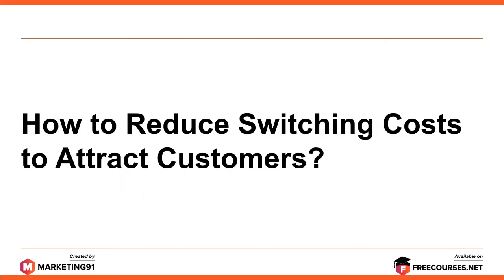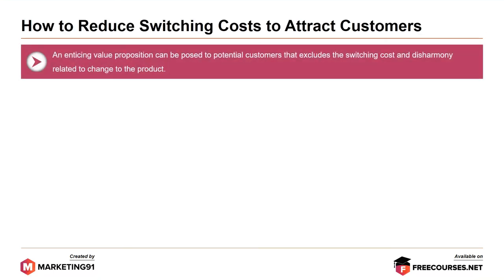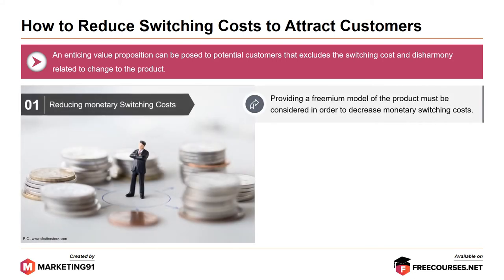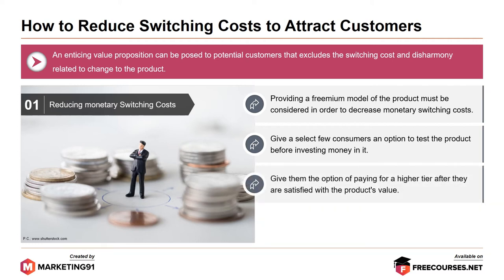How to reduce switching costs to attract customers? An enticing value proposition can be posed to potential customers that excludes the switching cost and disharmony related to the change to the product. Reducing monetary switching cost: providing a freemium model of the product must be considered in order to decrease monetary switching cost. Give a select few customers an option to test the product before investing money in it, and give them the option of paying for a higher tier after they are satisfied with the product's value. Switching cost can also be reduced by providing trial periods.